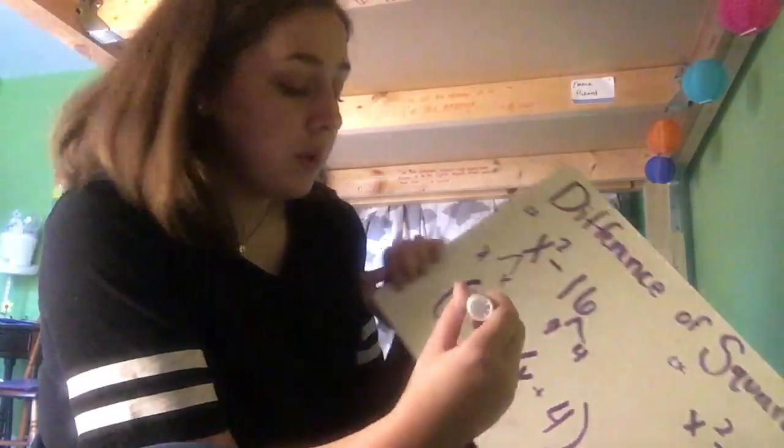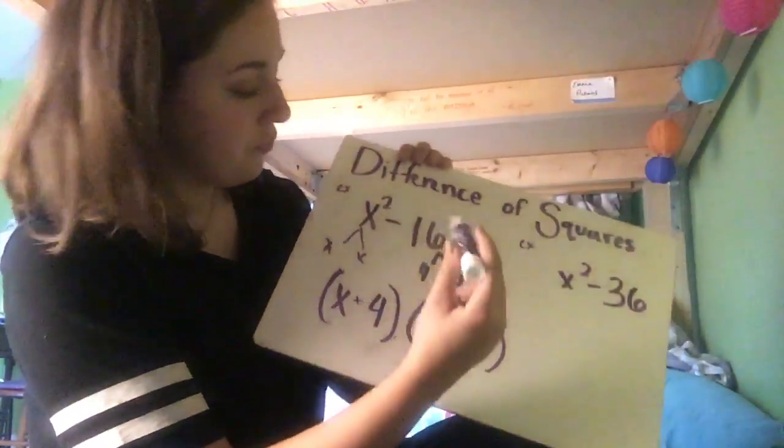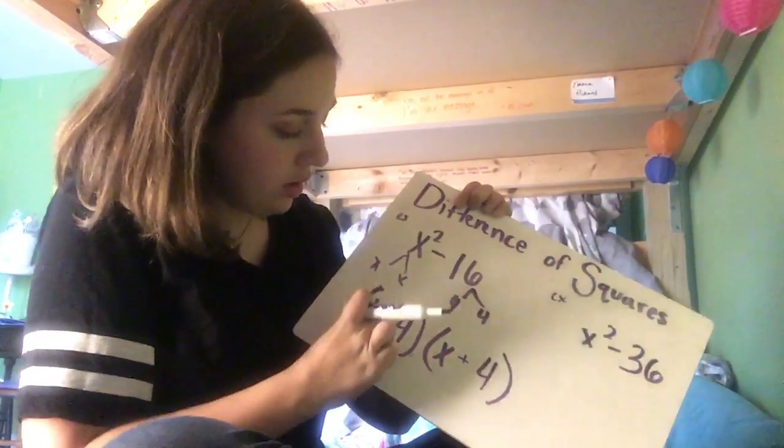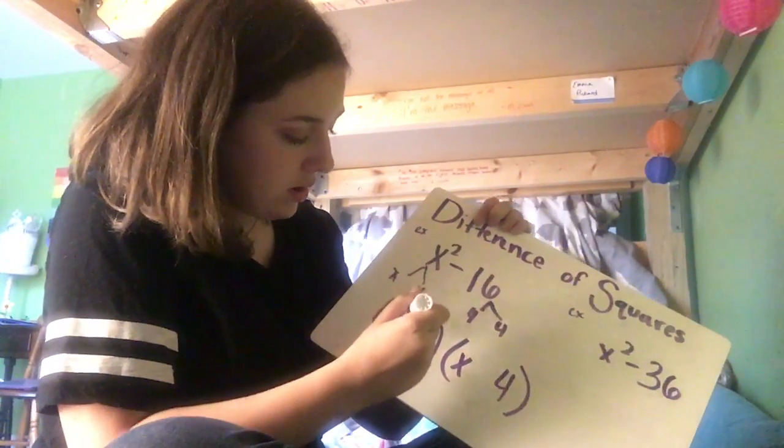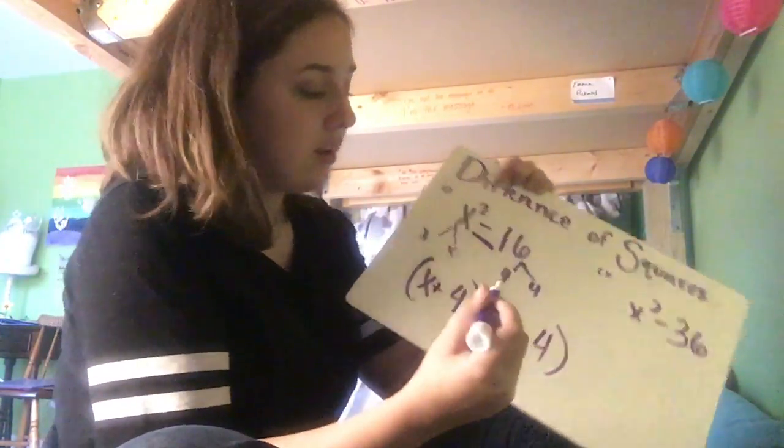And then, we would have a b number, but we don't have one here because it cancels out. So, instead of them both being positive, one is positive and one is negative because this number is negative.